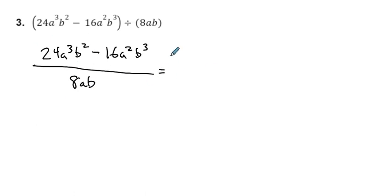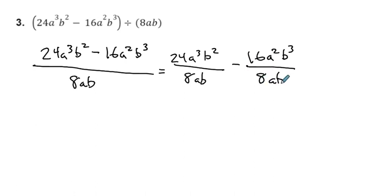24a³b² over 8ab. So we're distributing, kind of think of it as distributing the denominator to all the different terms in the numerator, right? But with division instead of multiplication. All right, so we have 24a³b² over 8ab minus 16a²b³ over 8 times a times b.